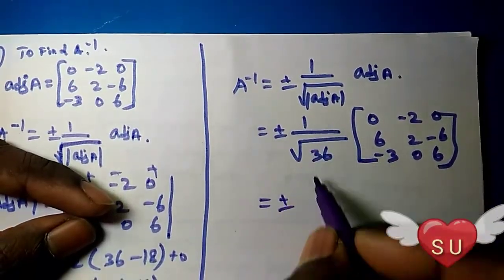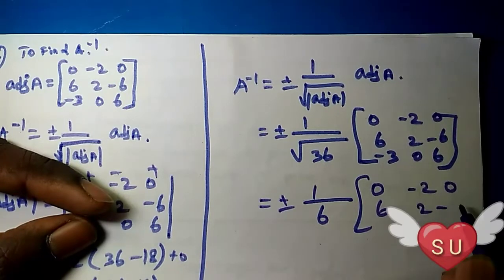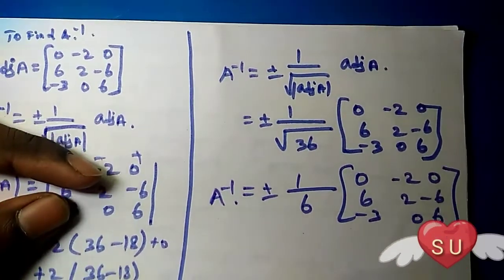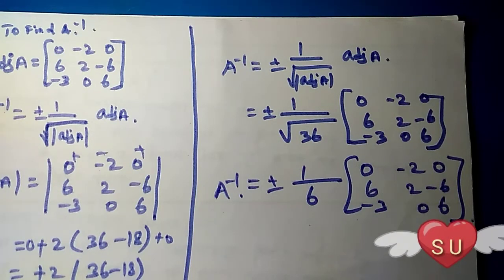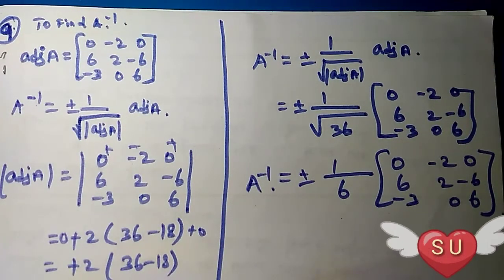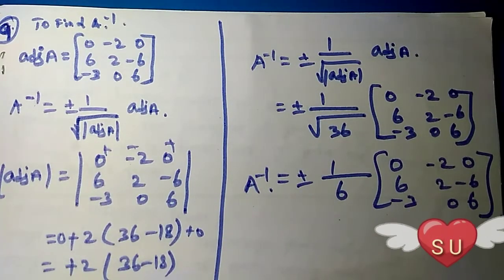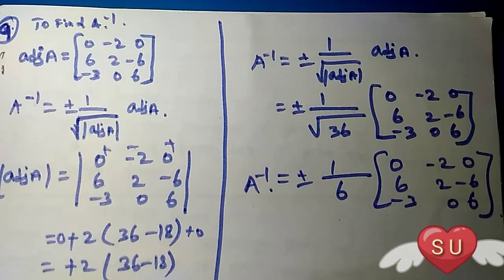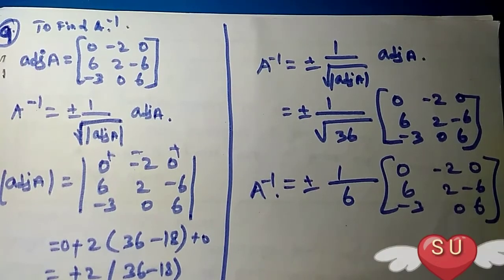Okay, now plus, plus minus, two, zero, six, minus three, six. These are A inverse. Okay friends, from this — A inverse is one divided by minus of A times adjoint A — so A inverse is one divided by minus of A adjoint. The root of minus of adjoint, root of minus of adjoint. Okay, thank you friends.